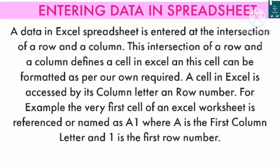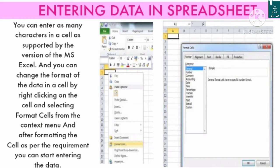Entering data in a spreadsheet: data in Excel is entered at the intersection of a row and a column, which is defined as a cell. A cell in Excel is accessed by its column letter and row number. For example, the very first cell is referenced as A1, where A is the first column letter and 1 is the first row number. You can change the format of data in a cell by clicking on it and selecting Format Cells from the context menu, then start entering data.